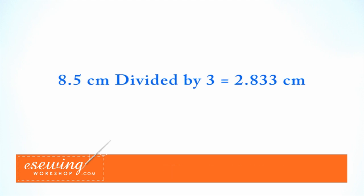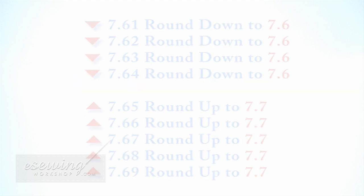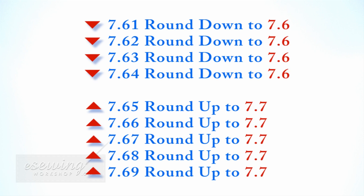When working with centimeters we may end up with a number with 2 or more digits after the decimal point. For example when we divide 8.5 centimeters by 3, we get 2.833 centimeters. In this case we round the number down to 2.8 centimeters. For our purposes we need only to deal with the first two numbers after the decimal point. If the second digit after the decimal point is less than 5, we round down. If it's 5 or more, we round up. Here are a few examples for when we round up or down.